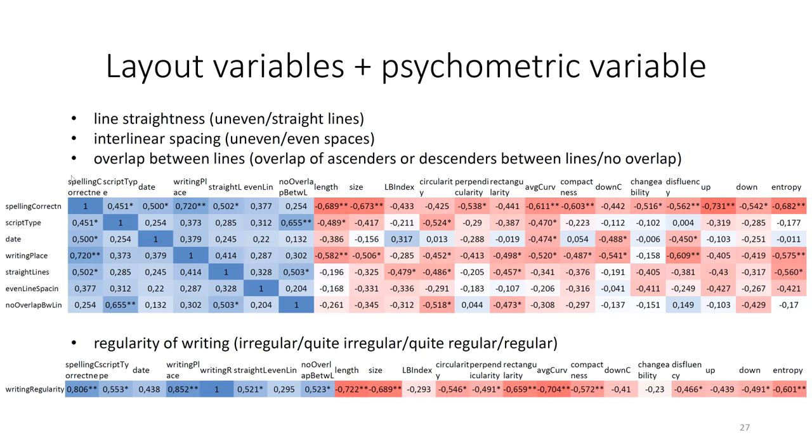Finally, there is a fully subjective psychometric variable, regularity of writing. Before I started quantifying characters, I evaluated the regularity of the handwriting in each document on a four-level scale. This variable correlates surprisingly strongly with spelling correctness, writing place and several handwriting variables. And I think it proves that the eye-based estimation of handwriting's overall regularity corresponds quite well to the variation of individual handwriting features measured by script analyzer. In other words, handwriting looks the more regular, the less its constituent characters show variation in length, size, circularity, perpendicularity and so on.